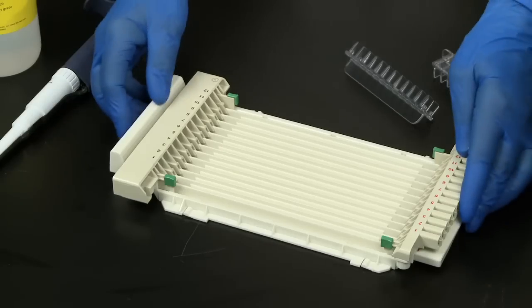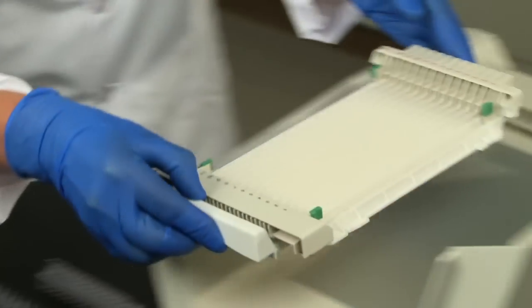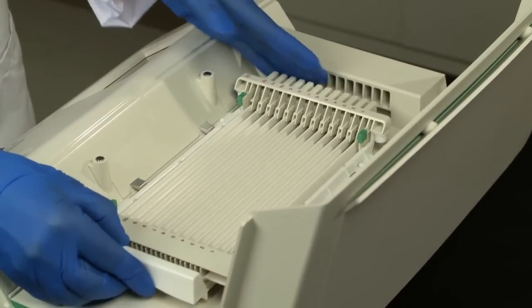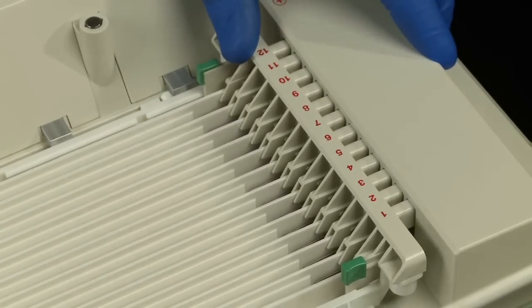Once the tray and strips are assembled, place the tray on the platform of the instrument, and insert the positive electrodes into the slots on the instrument.